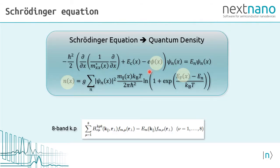The Schrödinger equation uses the electrostatic potential of the Poisson equation as an input and calculates the energy levels and the wave functions of the charge carriers. These wave functions are occupied using a Fermi Dirac distribution to obtain the electron density. The equation here shows the single band Schrödinger equation and the single band density. The same has to be done for the hole bands.